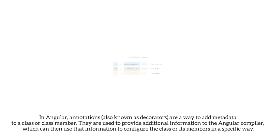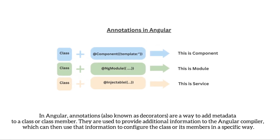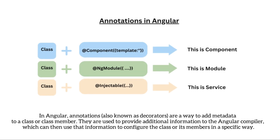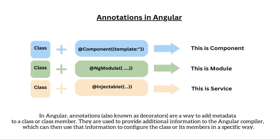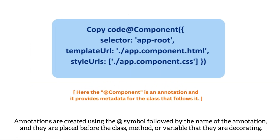In Angular, annotations — also known as decorators — are a way to add metadata to a class or class member. They are used to provide additional information to the Angular compiler, which can then use that information to configure the class or its members in a specific way. Annotations are created using the at symbol (@) followed by the name of the annotation, and they are placed before the class, method, or variable that they are decorating.